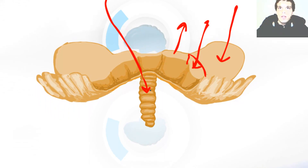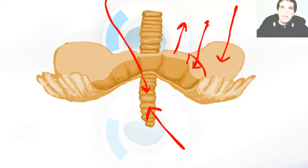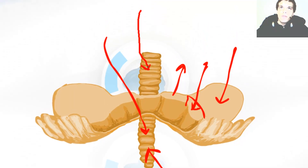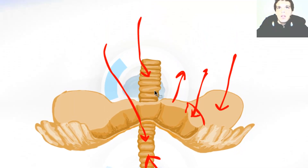This over here is the uvula and this over here is the pyramid of the vermis. Now let me draw the complete vermis — all of this is vermis. Up there we have the central lobe and we have the lingula of the cerebellum. All of that belongs to the vermis.